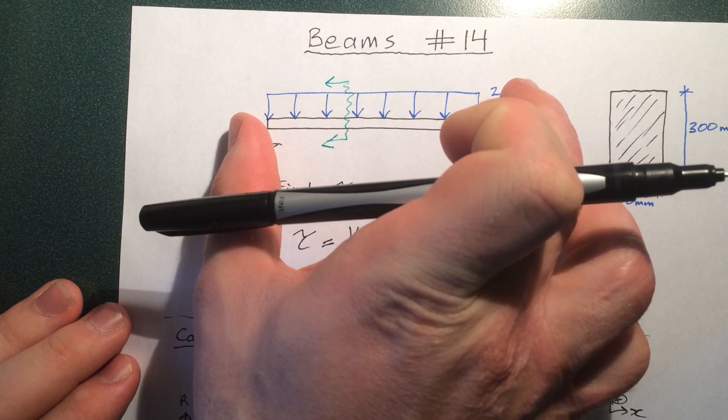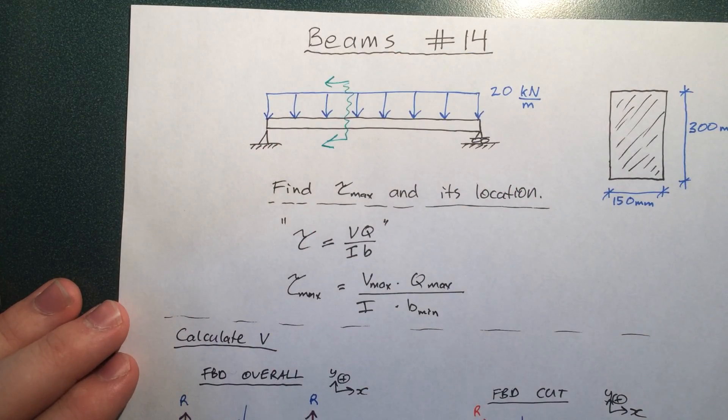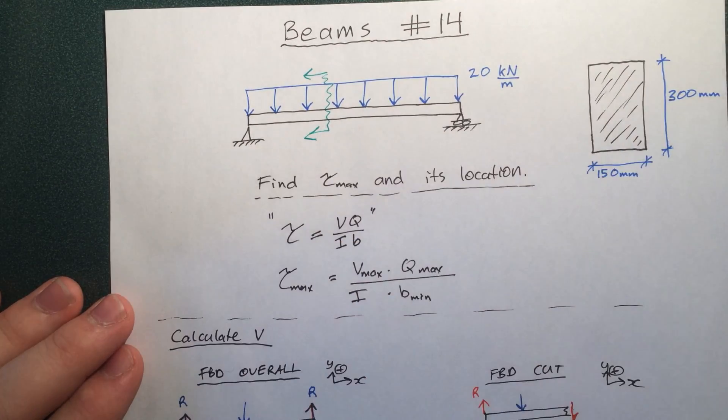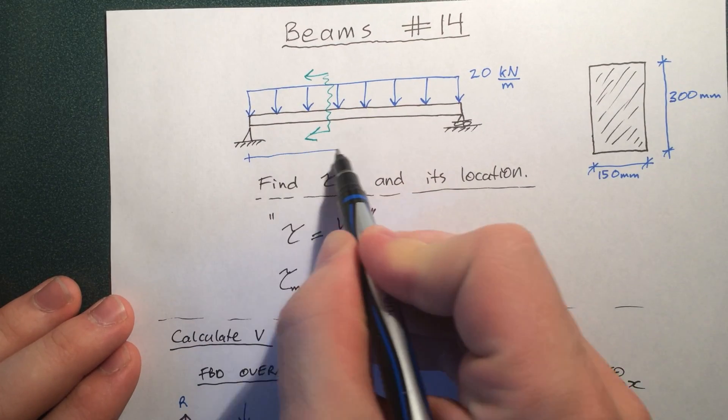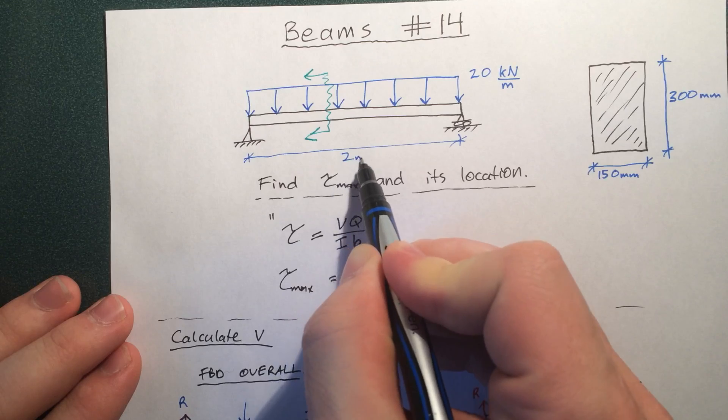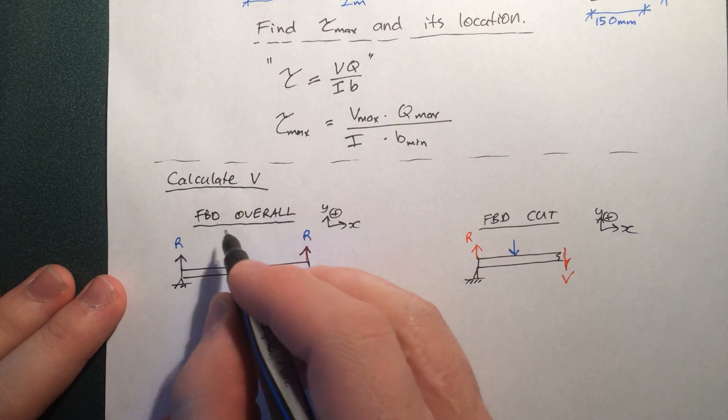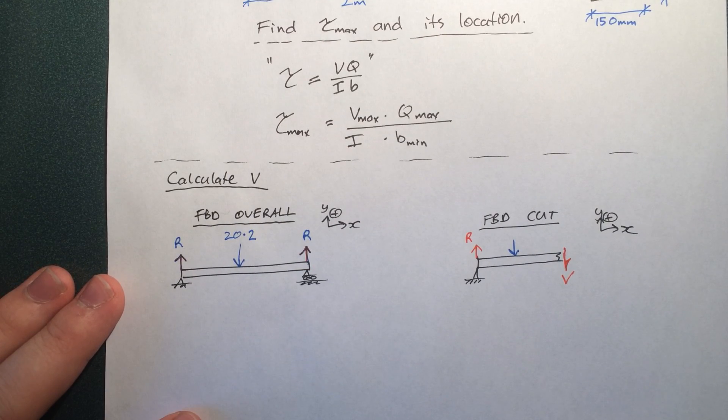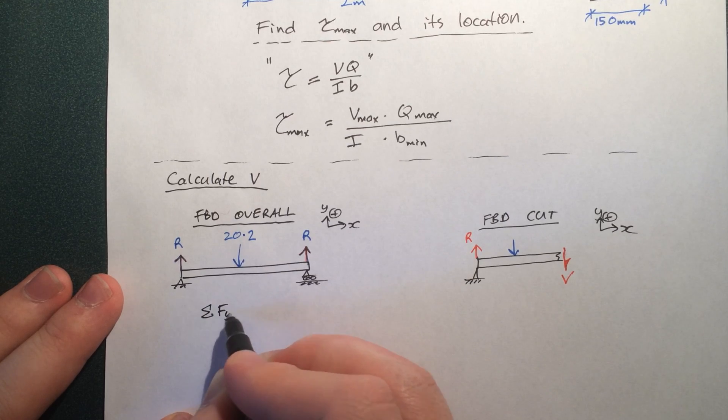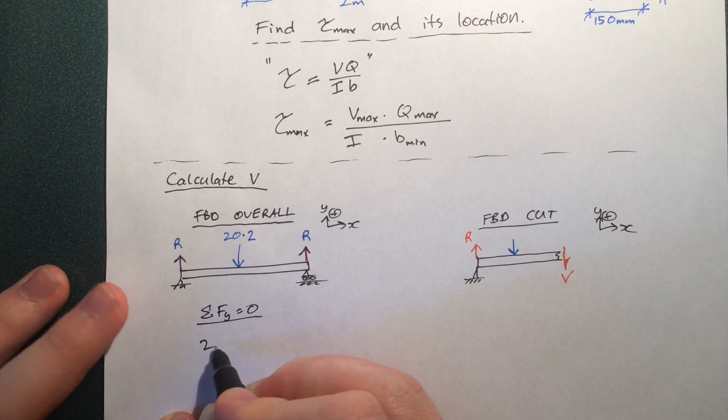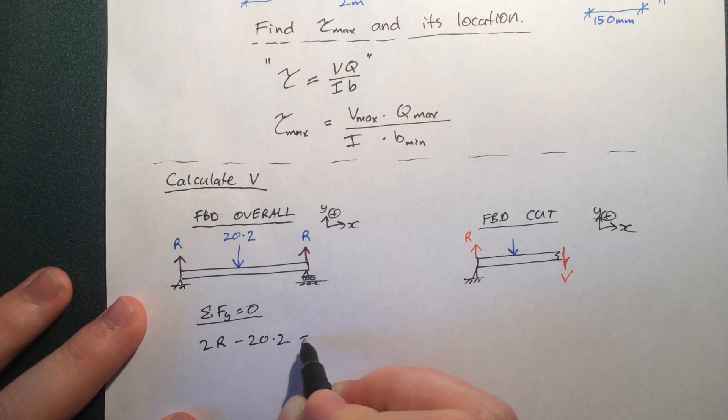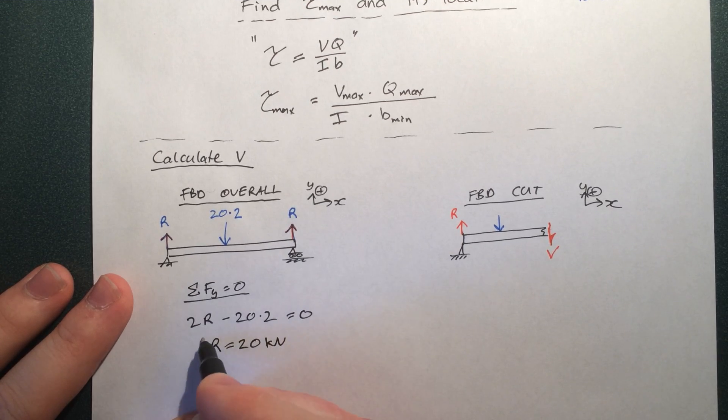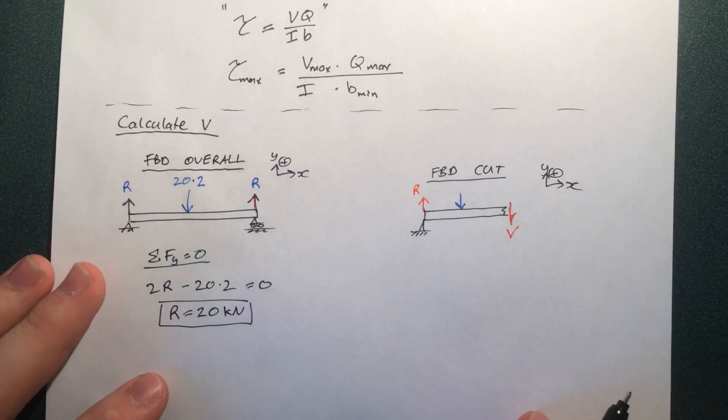What I've done is I've just collapsed this whole distributed load into one load, at which the magnitude is just going to be the applied load times the length. I haven't told you the length. I'll tell you it now. It's two meters. So, this bit here is just going to be 20 kilonewtons per meter times two meters. If we sum up, we can say R equals 20 kN.